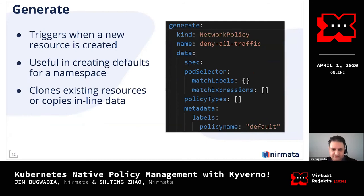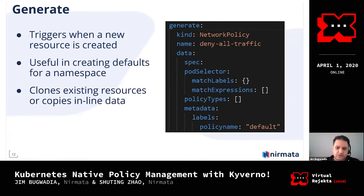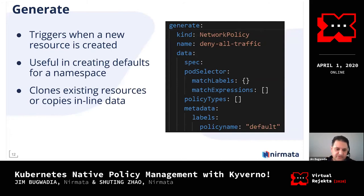Finally, here's an example of a generate rule — a very powerful feature of Kyverno. Here we're showing a network policy that denies all ingress and egress traffic, used as a default policy when a new namespace is created. The namespace owners can then add additional policies for their workload. This can be triggered for any type of resource — namespaces are a very common example. What we support today is the ability to copy data from existing resources or from inline data within the policy itself.